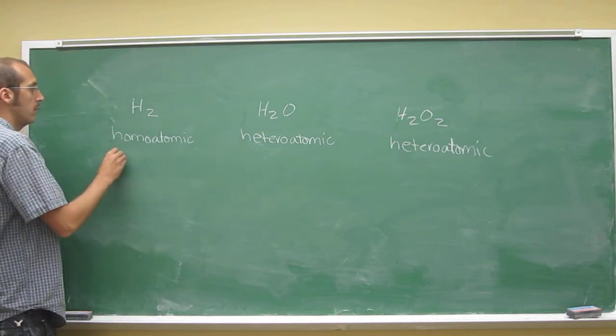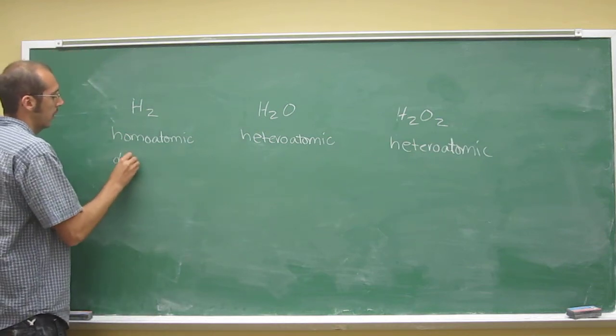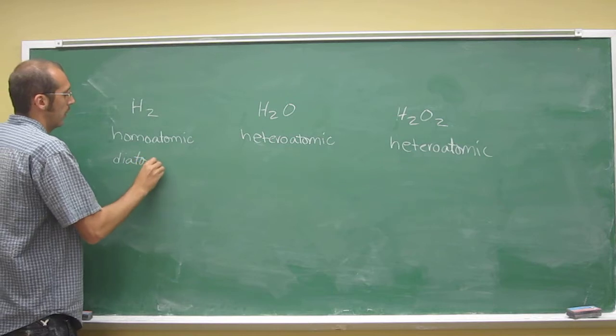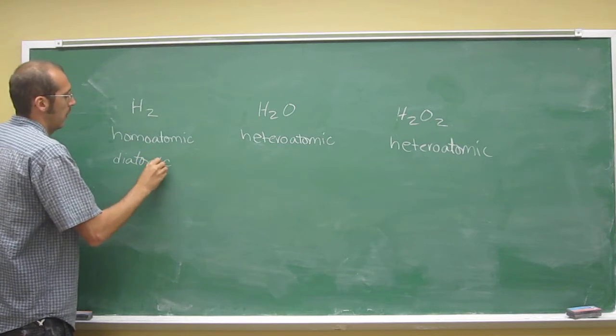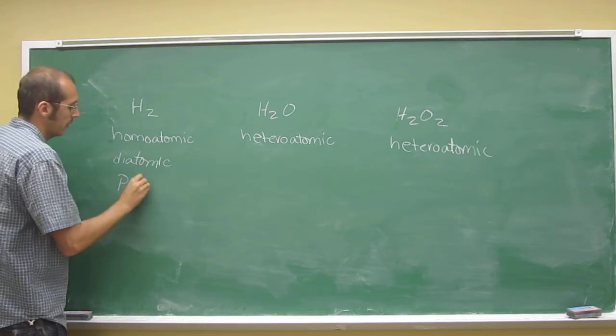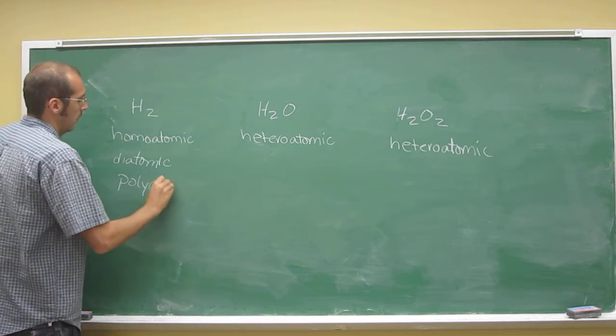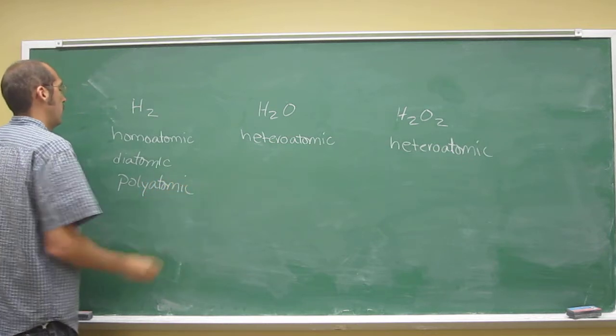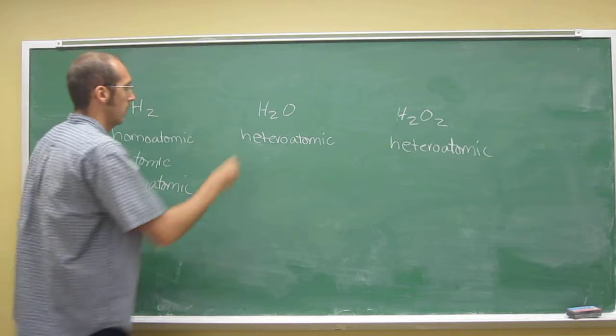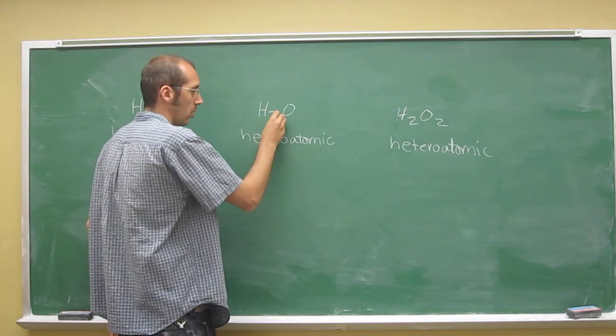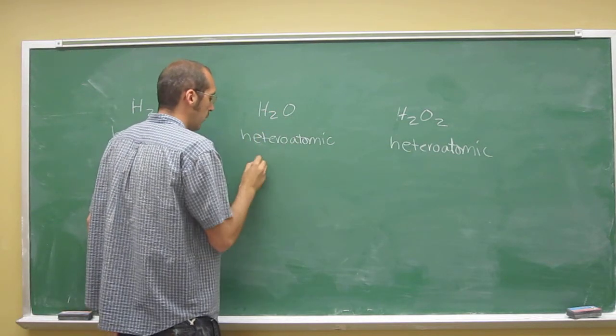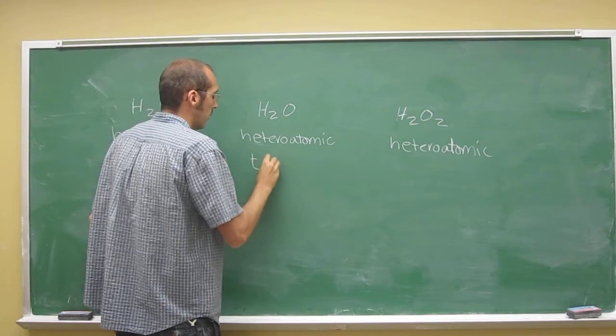So two atoms can be called diatomic or polyatomic, and diatomic because it's got two. Three atoms - H2O, two H's and one O - is triatomic.